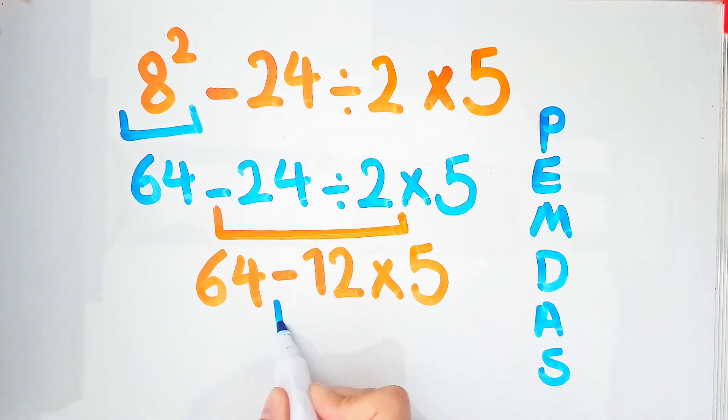Again we have a new expression: 64 minus 60, and the final answer of this question equals 4.